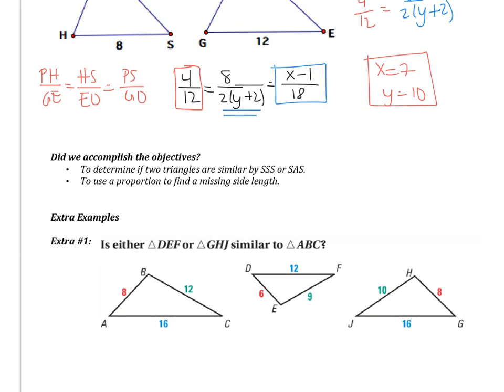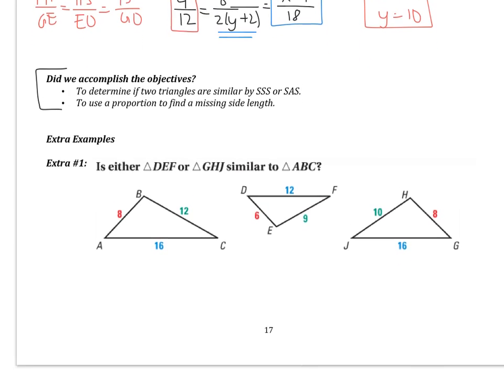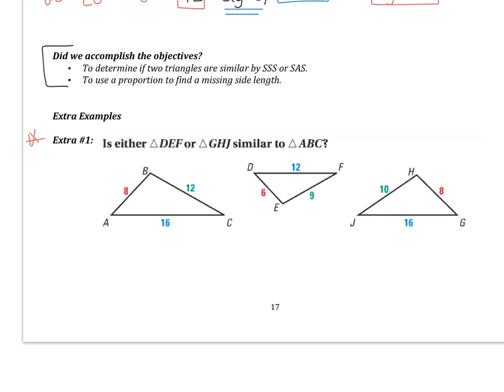Did we accomplish the objectives? We learned about SSS and SAS and used those to identify similar triangles — to tell me yes, the triangles are similar, or no, they're not. And then we used proportions to find missing side lengths. You have one extra example to do: it asks whether triangle DEF or triangle GHJ is similar to triangle ABC. You need to compare ABC to both DEF and GHJ, show all work, and bring any questions to class tomorrow.